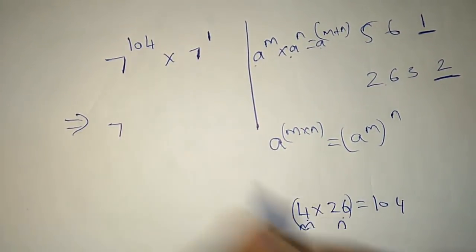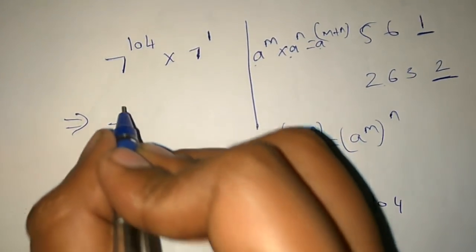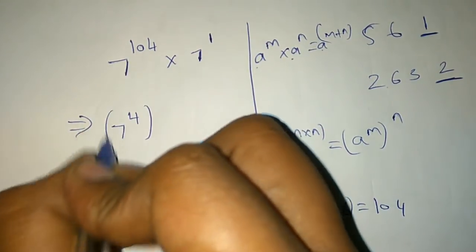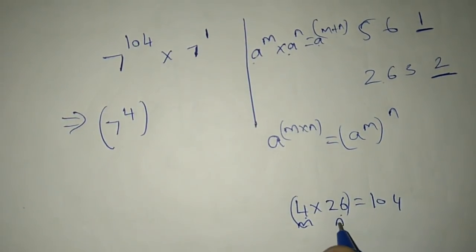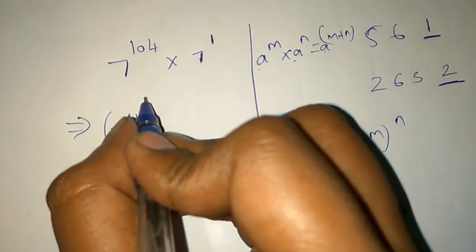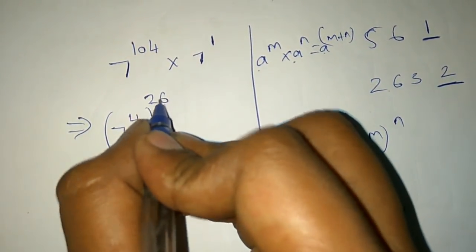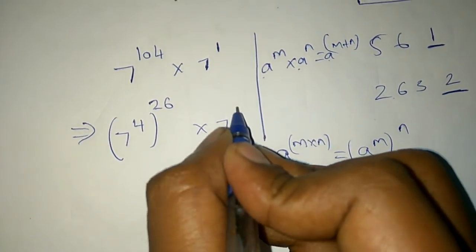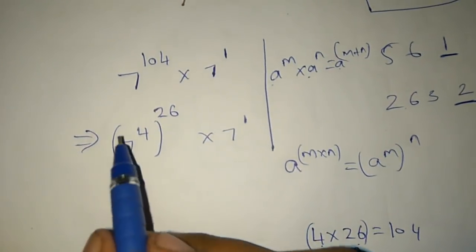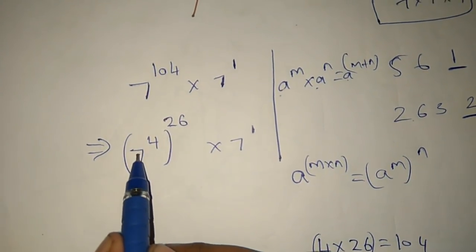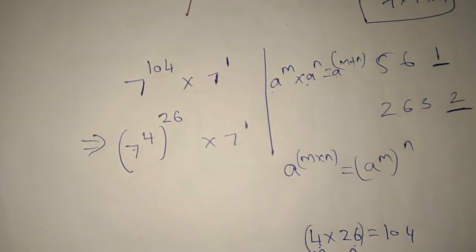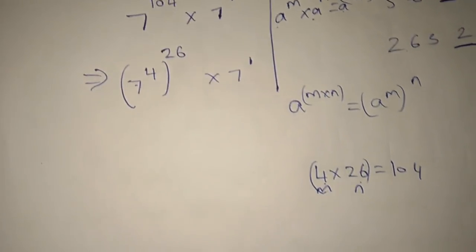So 7 power m is 4, all power n is 26. So this is 26. Now, 7 power 4 — now 7 is 4 times. We will multiply.